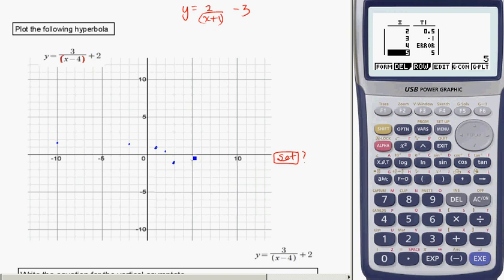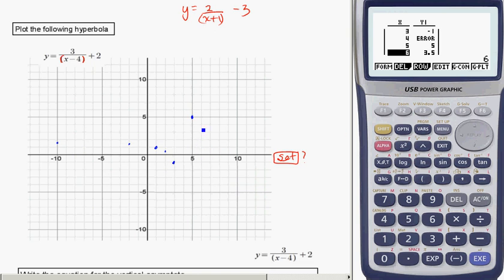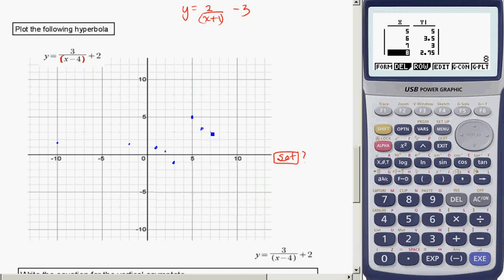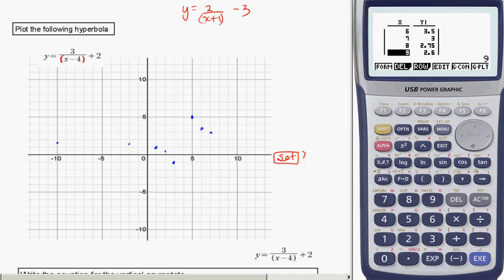So we'll go on to the other side, 5 and 5. Now we're up here all of a sudden. 6 and 3.5, 7 and 3, 8 and 2.75, how about 10 and 2.5?